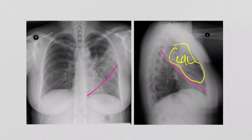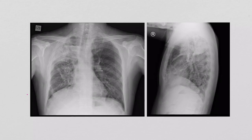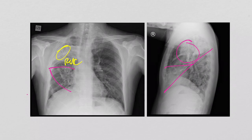On this next one, we can see something happening up on the right side. Drawing the fissures, it looks like that one is going to be clearly in the right upper lobe. Let's confirm on the lateral as well — and yes, there it is. This looks like a right upper lobe pneumonia.